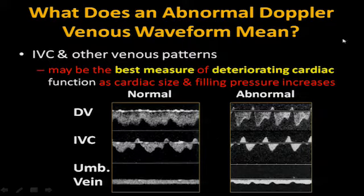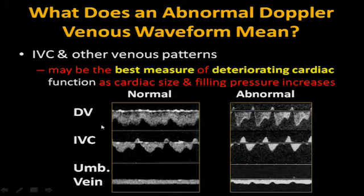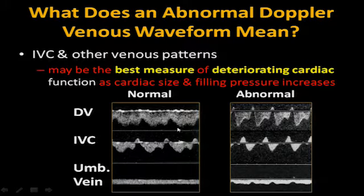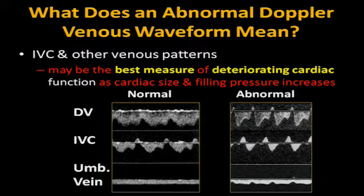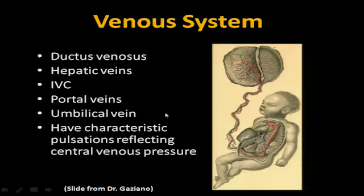What other Dopplers can we look at? We can look at the venous system: IVC and other venous patterns — especially with twins, this may be the best measure of deteriorating cardiac function as cardiac size and filling pressures increase. We look at the ductus venosus, IVC, and umbilical veins. With the ductus venosus, your peak levels should be greater than 35, and you should not see any reverse flow — the umbilical vein brings blood in, some goes to the portal, and the ductus venosus shunts the most highly oxygenated blood back up to the IVC and into the heart.